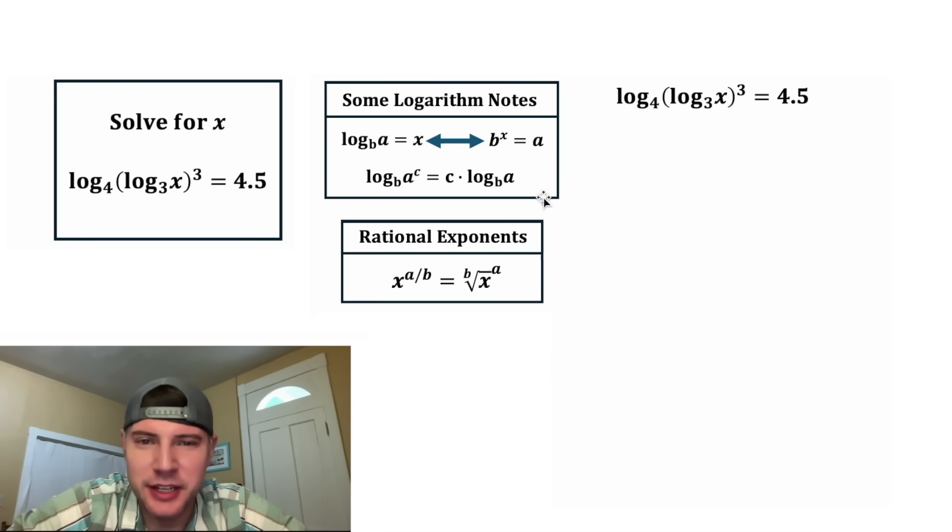And the other piece of logarithm notes we'll need is this right here. Anytime this input has an exponent, you can bring that exponent to the front. So log base b of a to the c is the same thing as c times log base b of a.